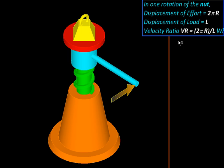The velocity ratio is also the ideal value of mechanical advantage in the absence of friction and other losses. So this is the maximum possible mechanical advantage.